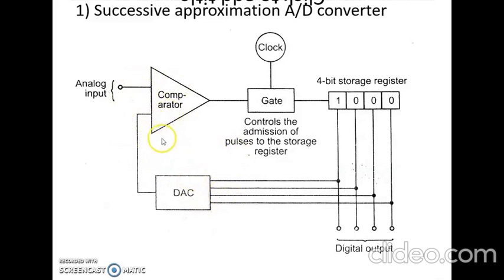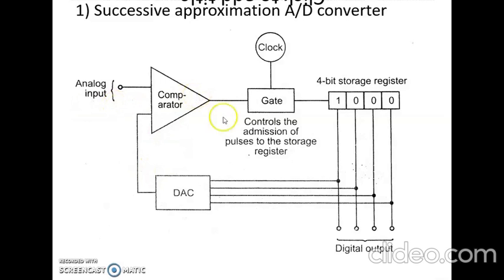This voltage increases or rises in steps and is continuously compared with the analog input voltage from the sensor. When the clock-generated voltage passes the input analog voltage, the pulses from the clock are stopped from being counted and the gate is closed. When the analog input voltage from the sensor becomes equal to the converted analog signal, the gate closes and the clock stops sending pulses. The output from the counter at that time is the digital representation of the input analog voltage.